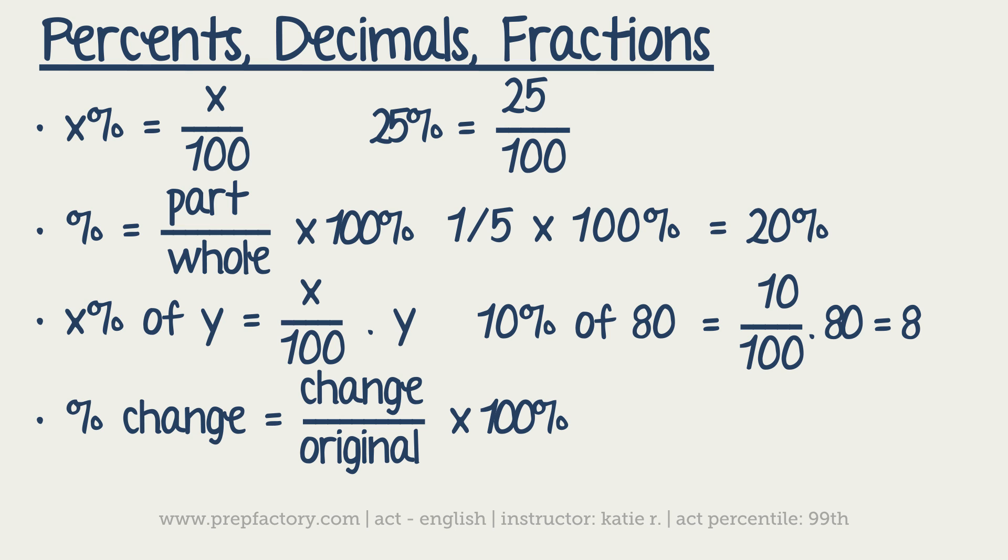All right, so our change between 20 and 30 would be a change of 10. So we'd have 10 over the original amount was 30.